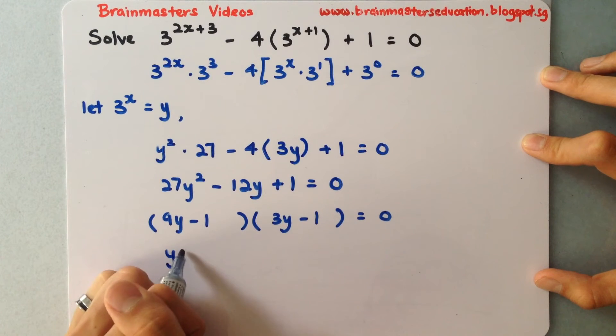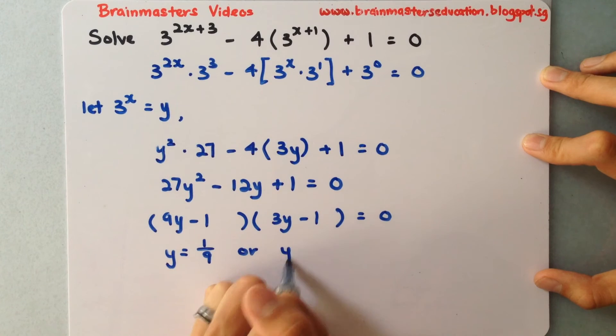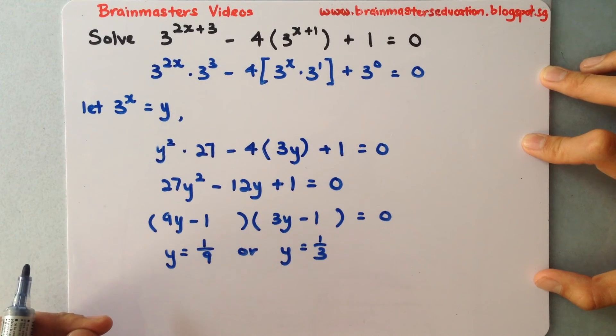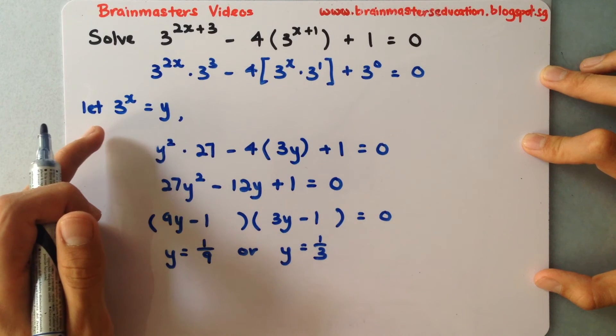So y equals 1 over 9 or y equals 1 over 3. But I don't stop here because I need to continue.